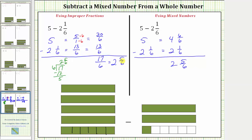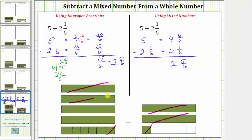Going back to the model one last time, we want to remove this quantity from this quantity. Let's first remove this one-sixth, then remove these two units. Notice how we're left with two and five-sixths, which again is our difference.